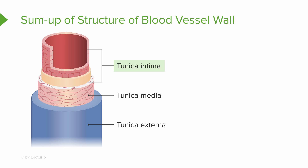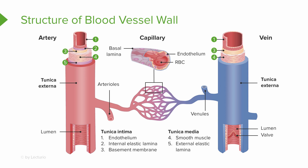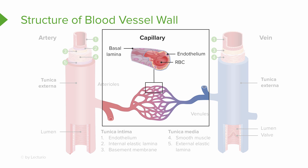To recap, the blood vessels in the body have three layers: the tunica intima, which is the innermost layer; the tunica media, which is the middle layer; and the tunica externa, which is the outer layer. Also, our blood capillaries, which are the smallest of our vessels, just consist of an endothelial layer surrounded by a loose basal lamina.